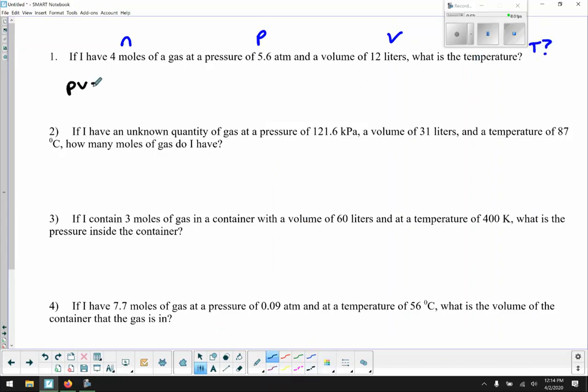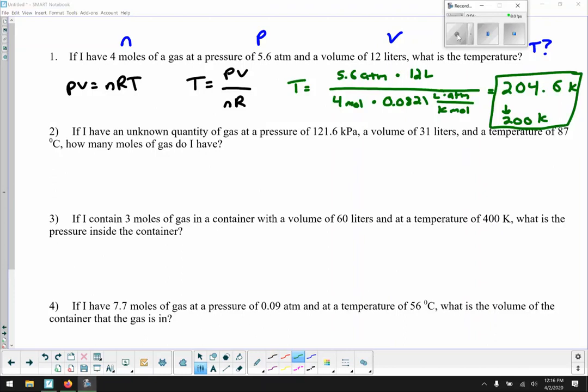So Ideal Gas Law, PV equals NRT. We need to rearrange this so that temperature is by itself to isolate temperature. So the temperature equals PV over NR. So we're just moving NR underneath the PV. That's our rearrangement. Now, all we have to do is plug in the numbers and do the math. So if I set it up and do all the math, 5.6 atmospheres times 12 liters divided by 4 moles times 0.0821 liter atmospheres per Kelvin-mole. So since the pressure was in atmospheres, I use the R value that's associated with that unit. So 0.0821 liter atmospheres per Kelvin-mole. I get 204.6 kelvins.